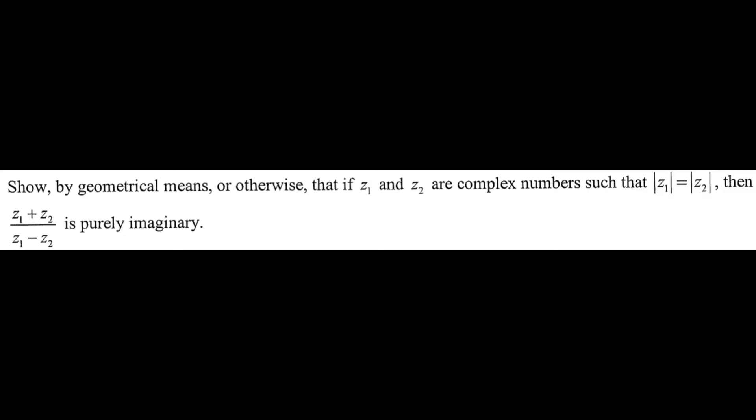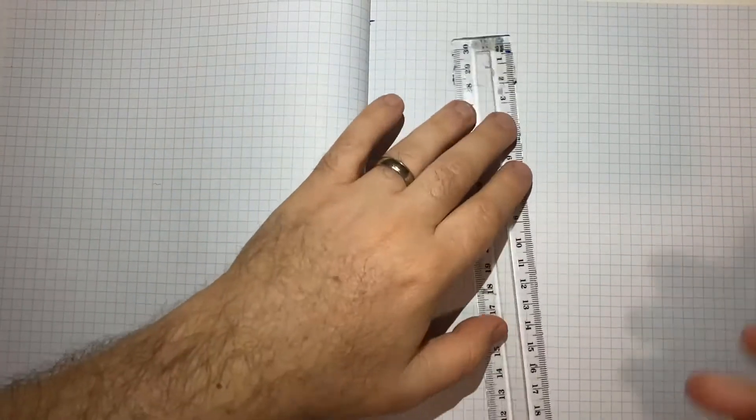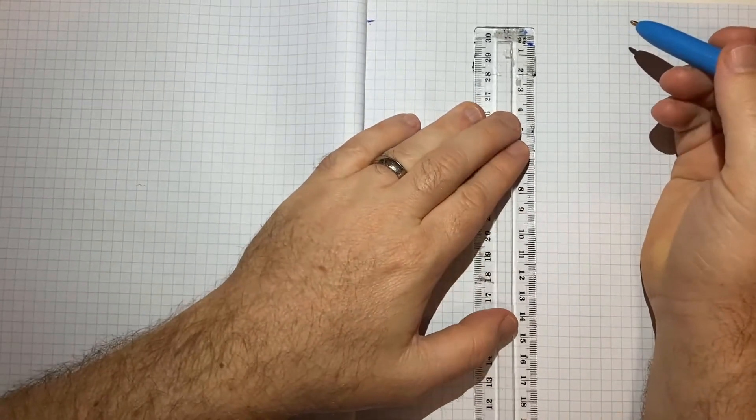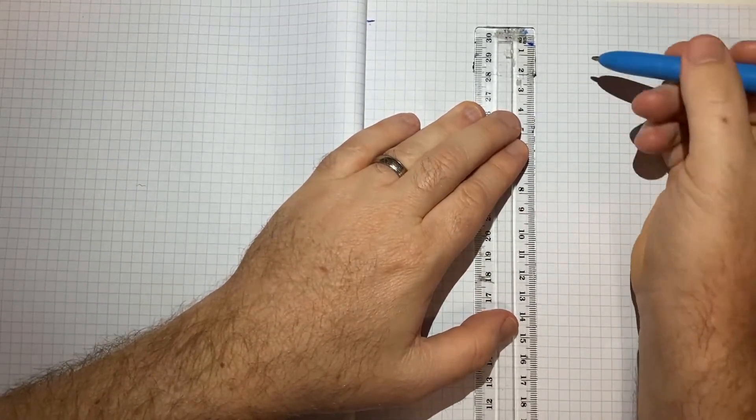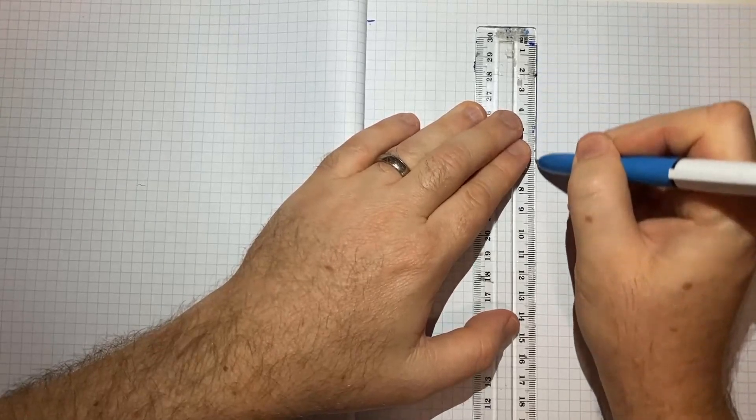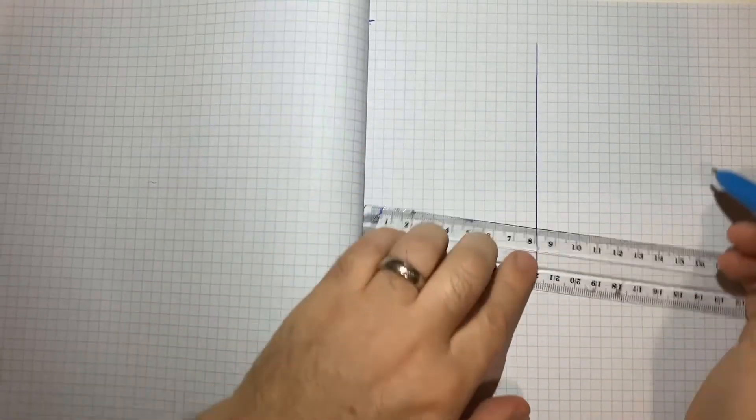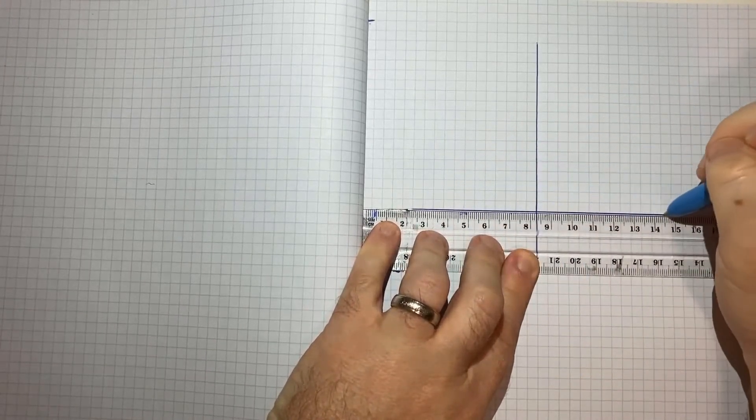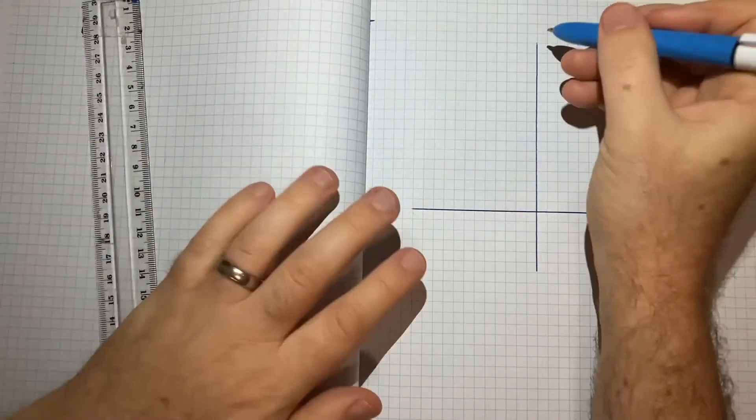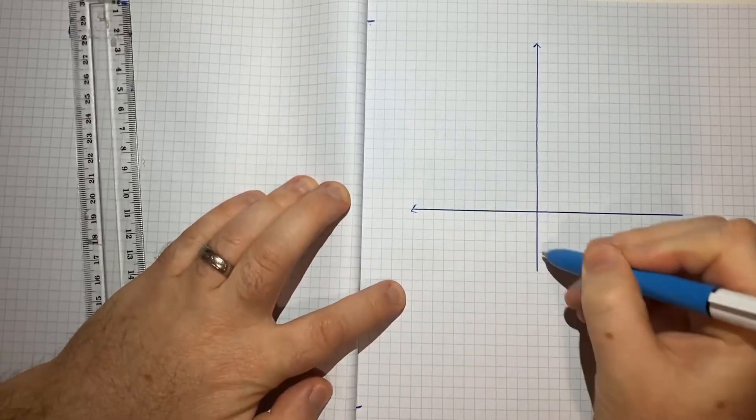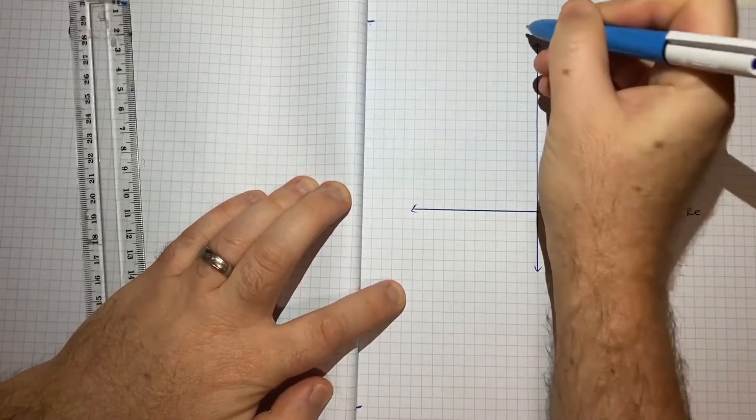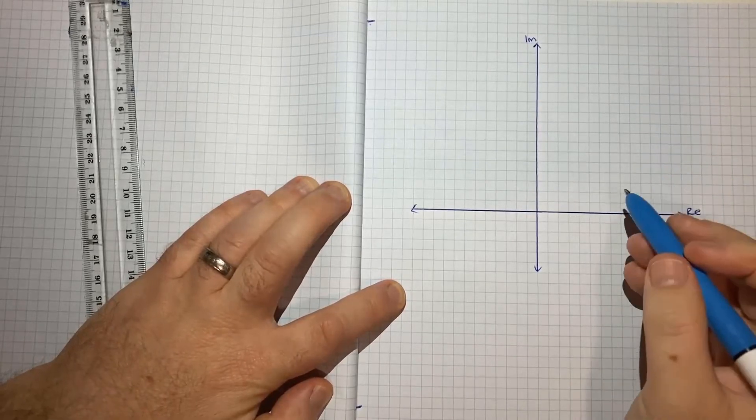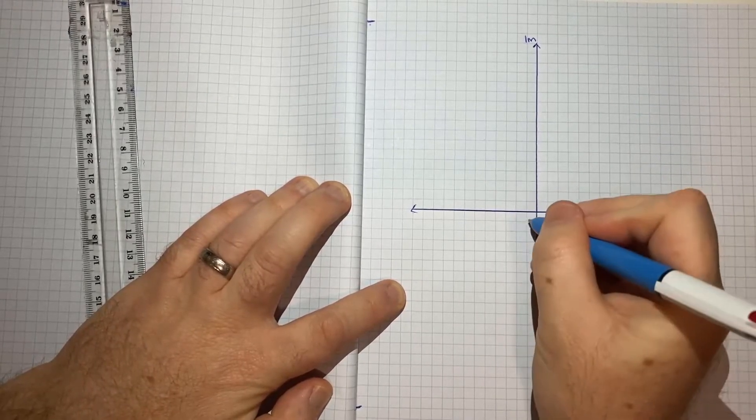So let's see if we can get there by first of all starting with an Argand diagram. I'll just draw up a diagram and because most of the working here will be visual, I'll make it a big diagram. So here we'll have our real plane and our imaginary axis and the origin.